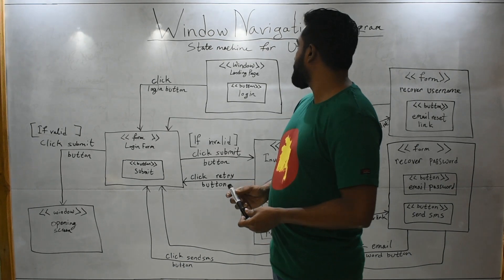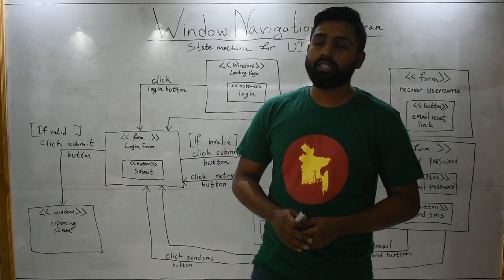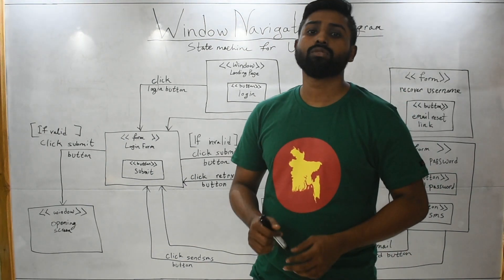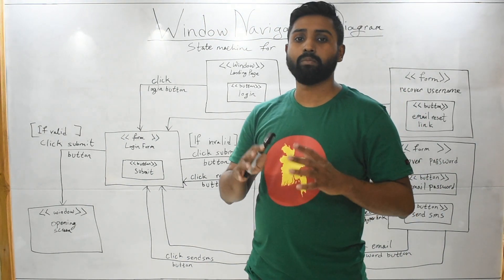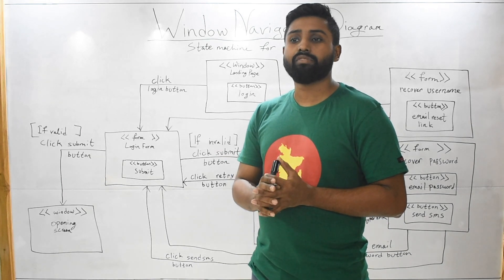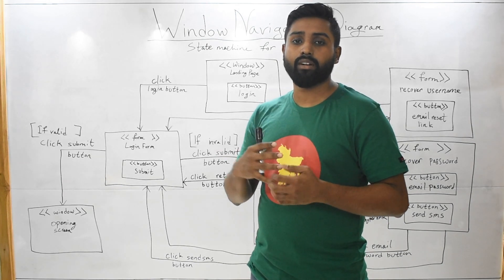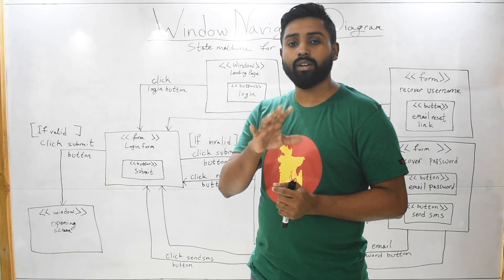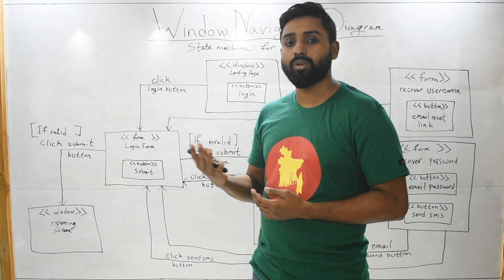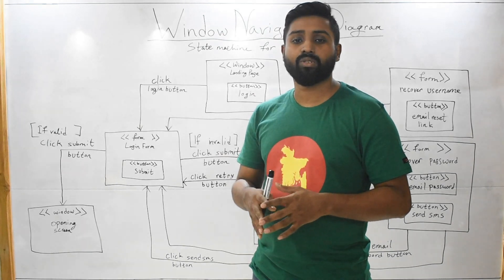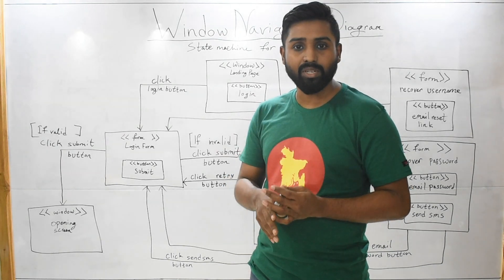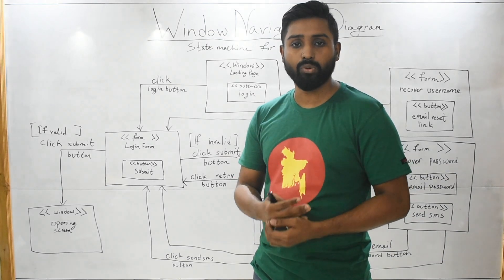A window navigation diagram is basically a state machine for your UI. What does that mean? It means it shows you each element of your system where, upon clicking one specific button, you are supposed to go to another page or another form. It's basically like a state machine but for your UI.